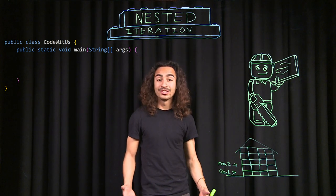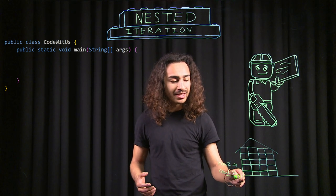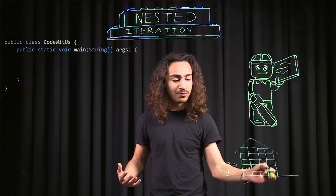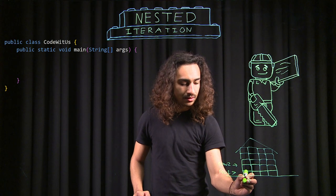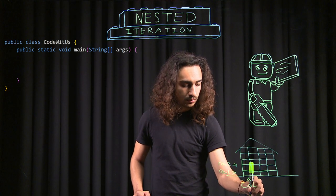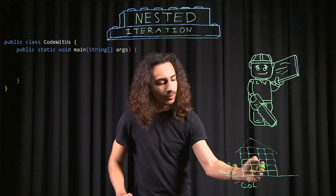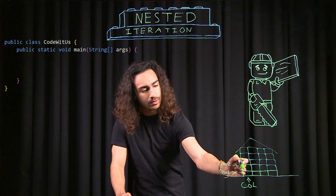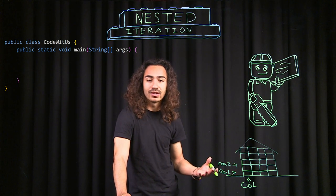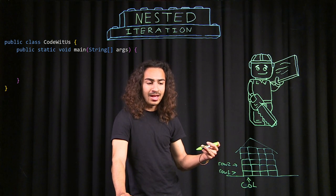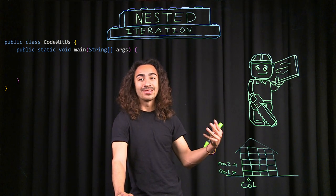What I did just there was nested iteration. For every single row, I made sure I completed or reached the end of that row before I went on to the next one. So if these are rows, then these over here are columns. There are four columns and five rows. So for each row, I made sure I put down four columns of bricks — pretty much looping through all the rows, and at each row, looping through all the columns. That's nested iteration: a loop inside another loop.